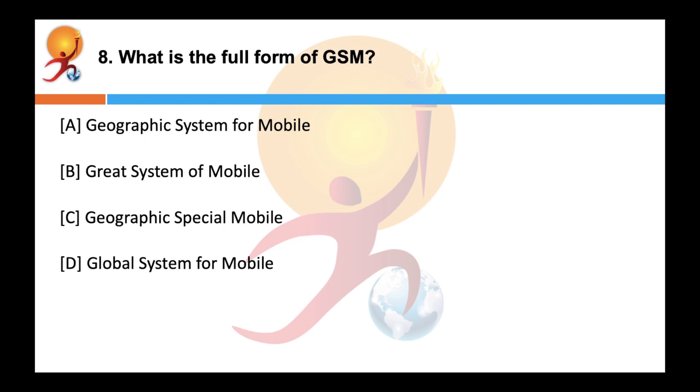What is the full form of GSM? Correct answer is D. GSM stands for Global System for Mobile. Before this it was known as Group Special Mobile. As GSM increased its global presence, the term was changed to Global System for Mobile.